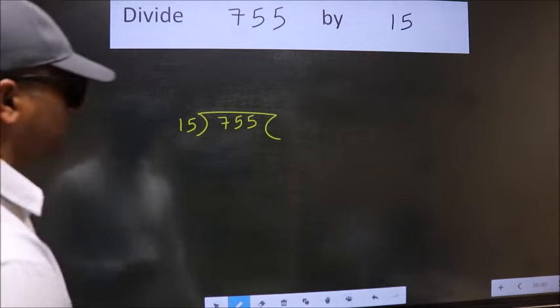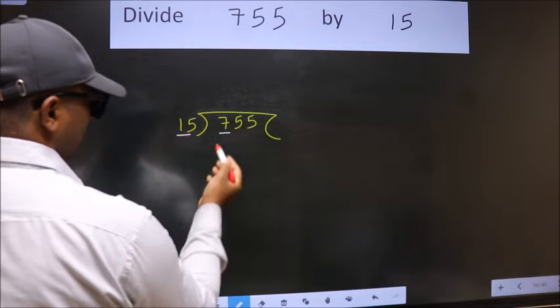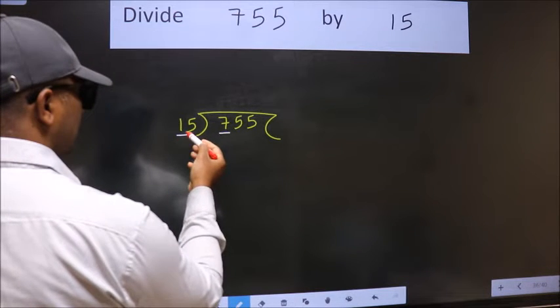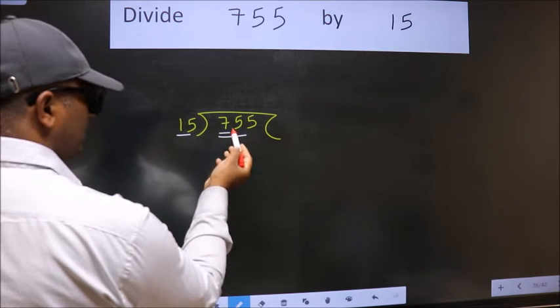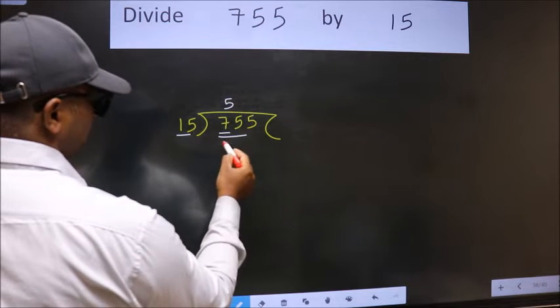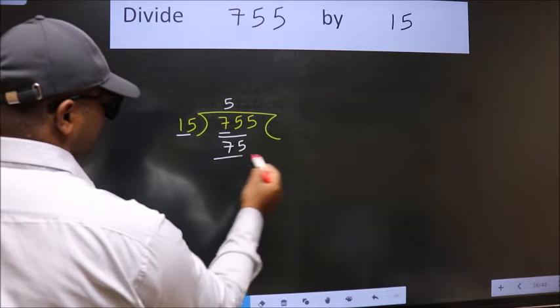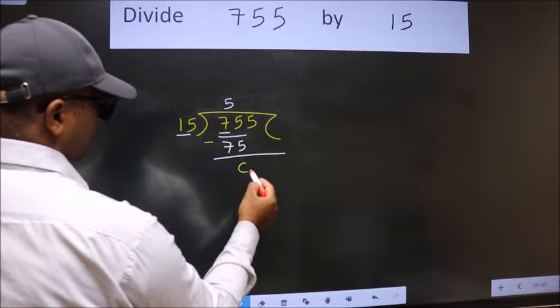This is your step 1. Next, here we have 7. Here 15. 7 is smaller than 15, so we should take two numbers, 75. When do we get 75 in the 15 table? 15 fives, 75. Now we should subtract. We get 0.